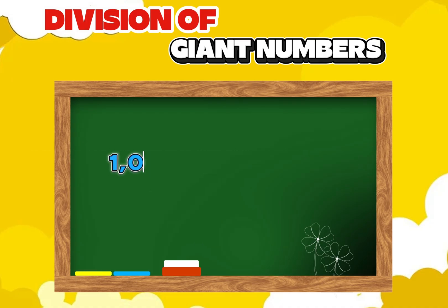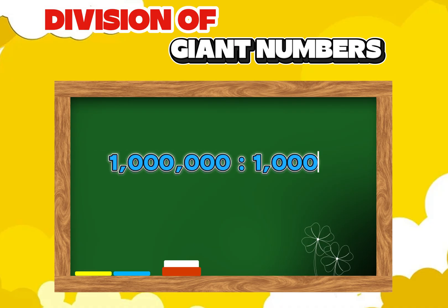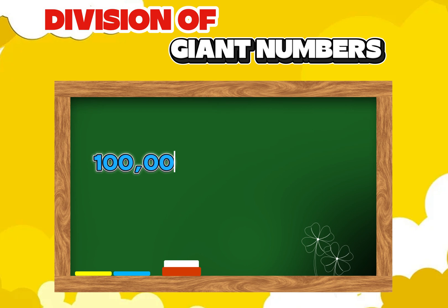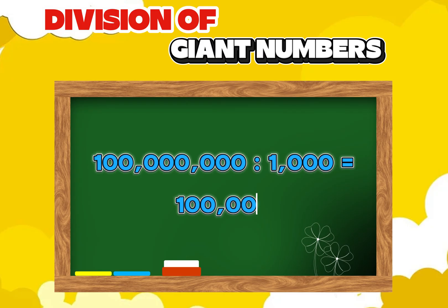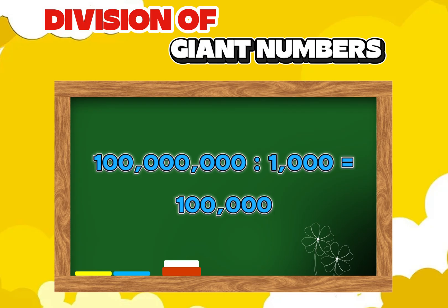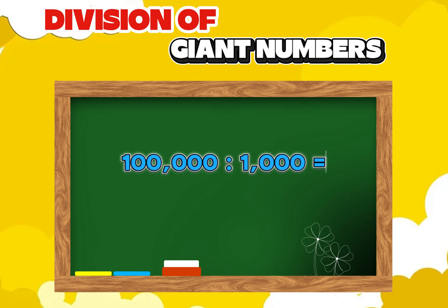One million divide by one thousand is equals two one thousand. One hundred million divide by one thousand is equals two one hundred thousand. One hundred thousand divide by one thousand is equals two one hundred.